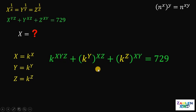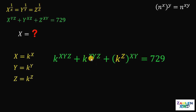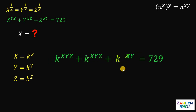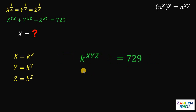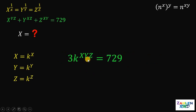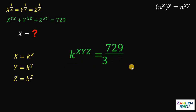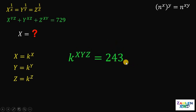The second term similarly becomes k raised to xyz, and the third term is also k raised to xyz. On the left-hand side, we can simplify this as 3 times k raised to xyz. Now divide both sides by 3. 729 divided by 3 gives us 243, so we get k raised to xyz equals 243.